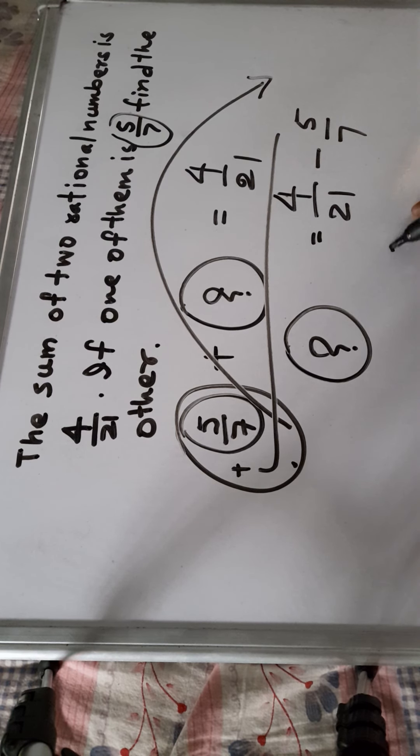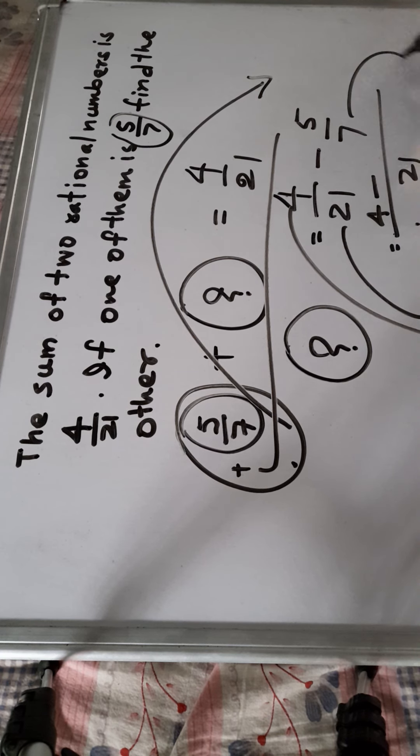So you have to simplify it. LCM of the 21 and 7 will be 21. First you divide it 21 divided by 21 it will go 1 times, 1 times 4 is 4, that is 4 minus. 7 you divide it by 7, 21 it will go 3 times and then 3 times 5 is 15, minus 3 times 5 is 15.